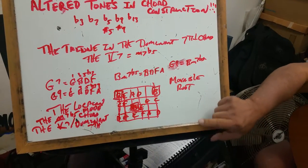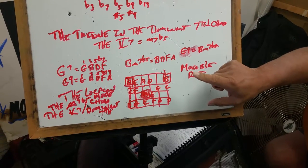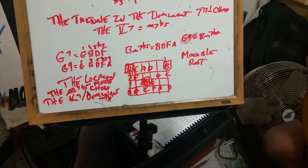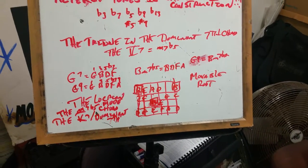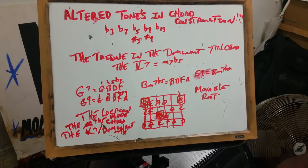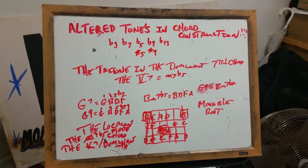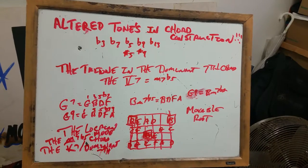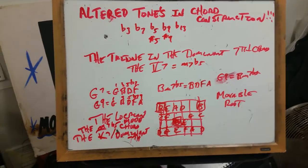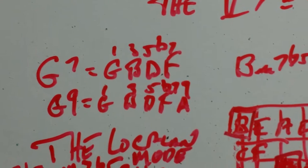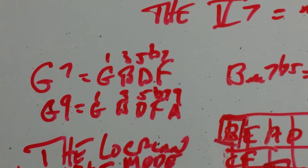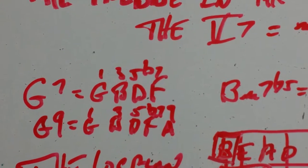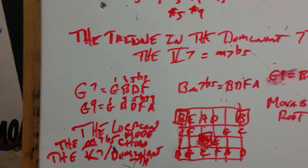Over here we have the G7, which is spelled G, B, D, F. G is the 1, B is the 3rd, D is the perfect 5th, and F is the flat 7th. The G9 is G, B, D, F, A. G is the 1, B is the 3, D is the 5, F natural is the flat 7th, and A is the 9th. The B minus 7 flat 5 is spelled B, D, F, A.